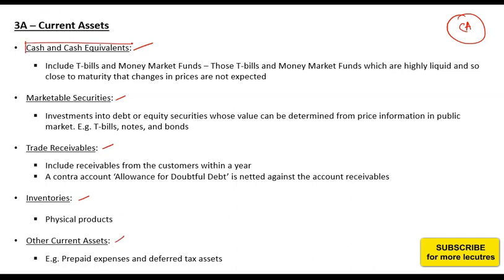You will normally see the term 'cash and equivalents' summed up and reported on the balance sheet. Cash and cash equivalents does not only mean physical cash — it also includes the most liquid instruments. Any instrument that is as liquid as cash, such as T-bills or money market funds that can be immediately converted into cash without any loss, is also carried under cash and cash equivalents.